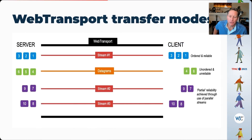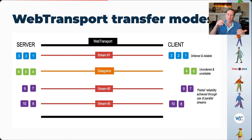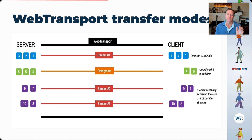The transfer modes of Web Transport are interesting, and I want to briefly highlight the differences. Let's model our Web Transport connection as a pipe between a server on the left and a client on the right, with streams of data flowing through it. In stream number one, I put objects numbered one, two, and three from the server, and on the client side they're received in the same order — this is ordered and reliable flow. Within the datagrams, I put in much smaller objects, four, five, and six, and the client only receives six and four — so datagrams are unordered and unreliable, but very fast, which is their attraction.